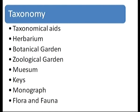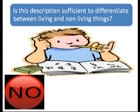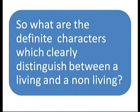To systematically study life, we will cover these topics: introduction and biodiversity, characters of life, binomial nomenclature, need of nomenclature, classification, taxonomy, and taxonomical aids — which include herbarium, botanical garden, zoological garden, museum, keys, monograph, and flora and fauna. Let us first discuss what are the characteristics of living things, and what clearly distinguishes living from non-living things.